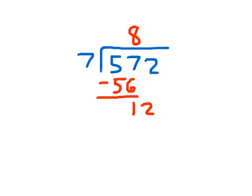We bring down the 2, and then we divide again. 12 divided by 7, which is 1. 1 times 7, which is 7. And 12 minus 7, which is 5. So our remainder is 5.